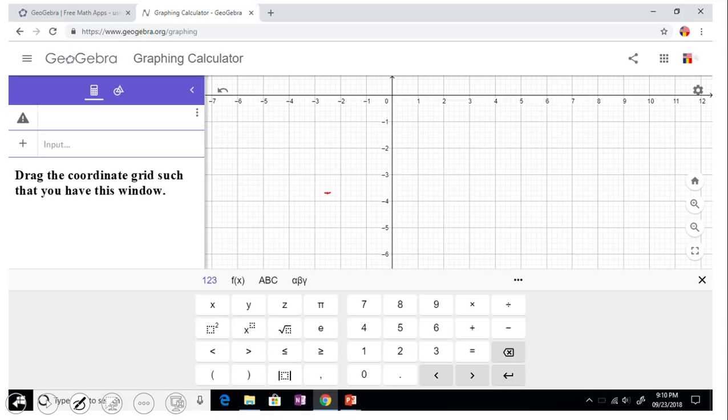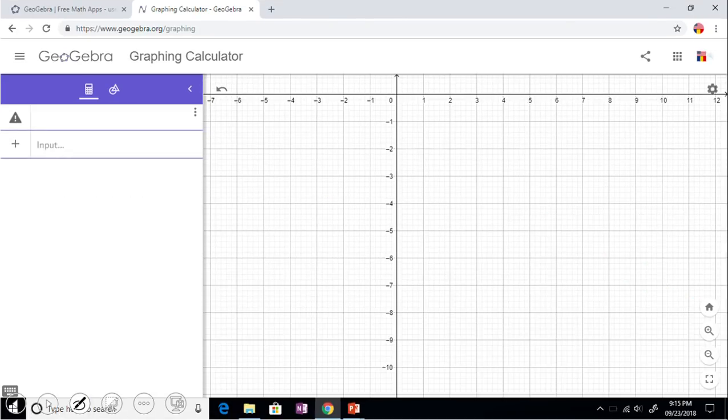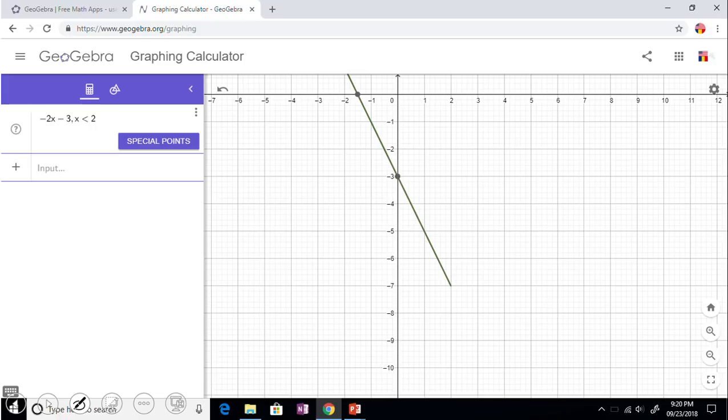Then I need you to type in exactly what you see here, which is negative 2x minus 3, comma x, and then use the less than button on your computer, 2. And you should see this line.